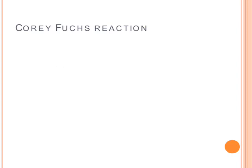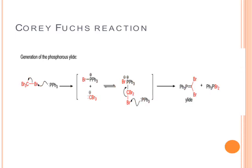The mechanism involves three steps. The first step is generation of the phosphorous ylide. This is a Wittig type of reaction in which triphenylphosphine first abstracts one bromide ion, generating a tribromomethyl carbanion and a triphenylbromo phosphonium ion. Then the negatively charged carbon atom attacks on the positively charged phosphorous, so there is formation of a carbon-phosphorous bond. Then a second equivalent of triphenylphosphine is added, which abstracts one bromide ion, and this leads to the formation of the phosphorous ylide.